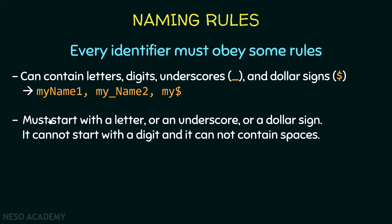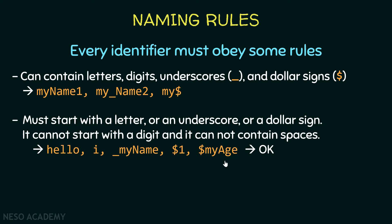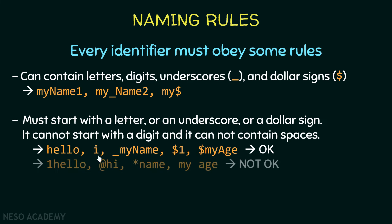Every identifier must start with a letter, an underscore, or a dollar sign. It cannot start with a digit, and it cannot contain spaces. These identifiers are okay — they start with a letter, underscore, or dollar sign and don't contain spaces. But these identifiers are not okay — they start with a digit or a weird character, and they contain spaces.